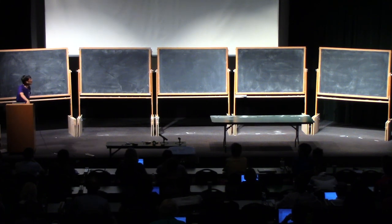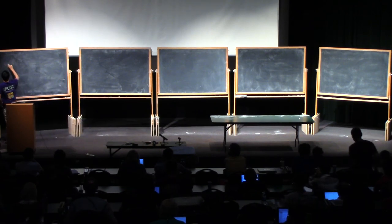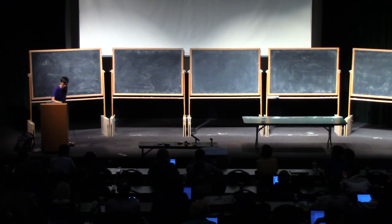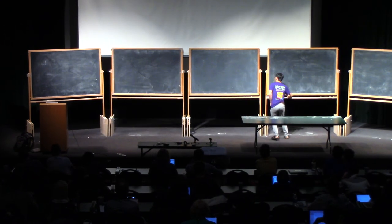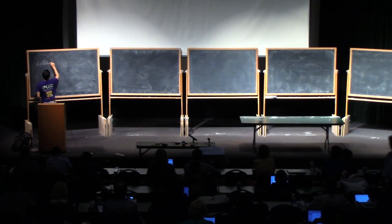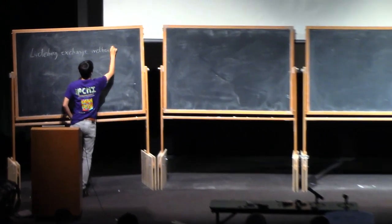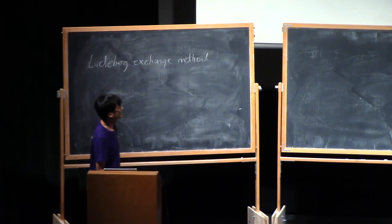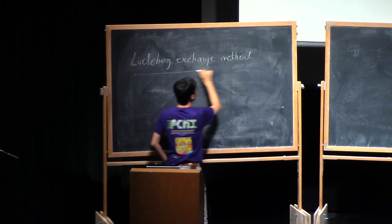I'll be talking about something that's loosely related to the other lectures but not so closely related, which is the Lindenberg Exchange Method. This is a tool for getting some universality results. It doesn't get you all the universality results that you'd like — you often need to combine it with a transverse method to get the best results.